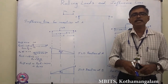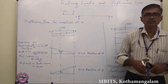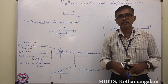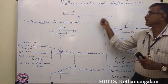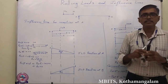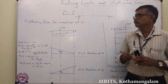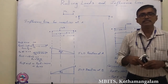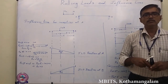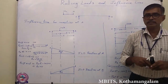An influence line is a graph of a function — the function may be shear force or bending moment — when a unit load moves from one end to the other end of a beam. From this graph, we can calculate the shear force as well as bending moment. As an initiative, we will start with the reaction at the support, since the maximum shear force at any cross section of a beam equals the reaction at the support.